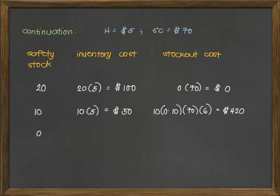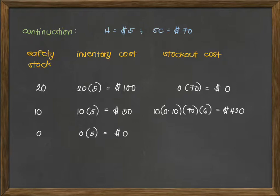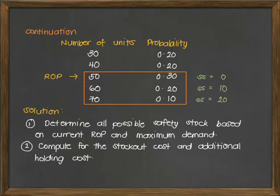Lastly, if we keep our inventory level at the current reorder point with no extra safety stock, it will not incur inventory cost. However, pagdating sa stock out cost, mas malaki yung stock out cost nito, kasi we are dealing with two possible scenarios: first, kapag naging 60, and second, kapag naging 70 yung ating demand. Balikan natin yung table: may 20% chance na maging 60 yung demand, at may 10% chance na maging 70 yung demand.